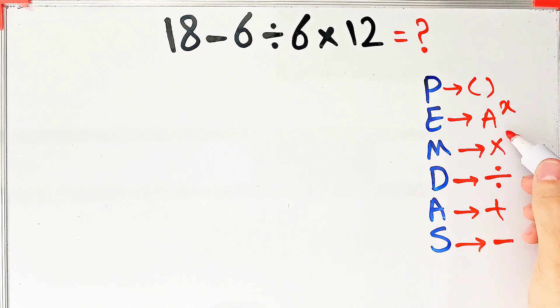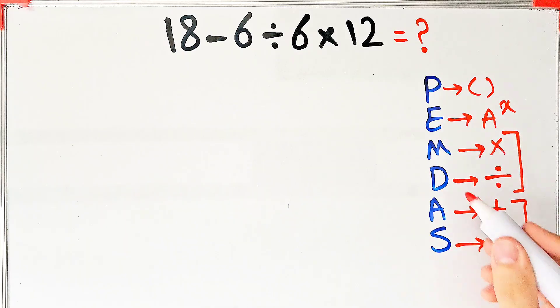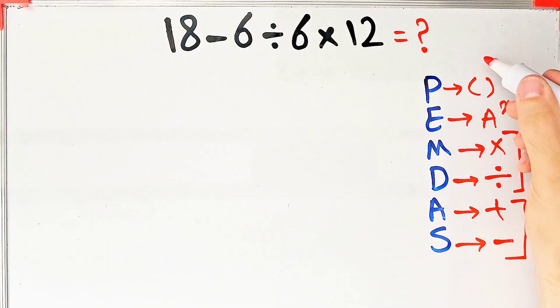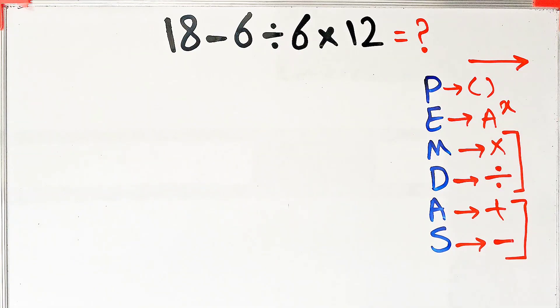Multiplication and division have the same level of priority. Also, addition and subtraction have the same priority. When we have both in an expression, we start from the left and simplify the question. In this question, we have subtraction, division, and multiplication.